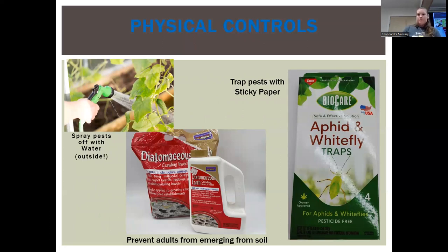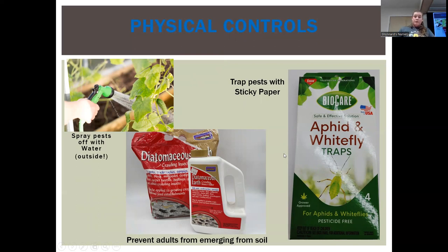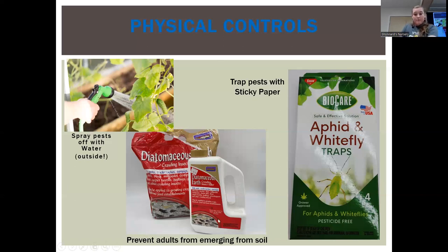So we've talked about the pests themselves, the plants they affect, and where they hang out. Now I'm going to go over chemical controls. Physical controls first, then move on to chemicals. The physical controls are going to control your population — hopefully a minor population can be handled with physical controls alone, but in some cases you do need to turn to chemicals as well. Spray pests off with water — outside or inside in a good area. Diatomaceous earth can create a physical barrier to prevent pests from emerging from the soil. Sticky paper can prevent adults from laying eggs in the soil.